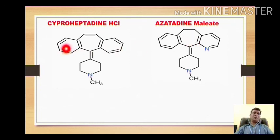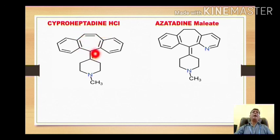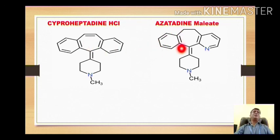In both cases, two six-membered rings are attached with the central seven-membered ring. In cyproheptadine, the central ring is cycloheptene — 'cy' stands for cyclo and 'hept' stands for heptene. In azatadine, the central ring is cycloheptane because there is no double bond in the central ring. So in cyproheptadine the central ring is cycloheptene (an alkene), while in azatadine the central ring is cycloheptane (an alkane).